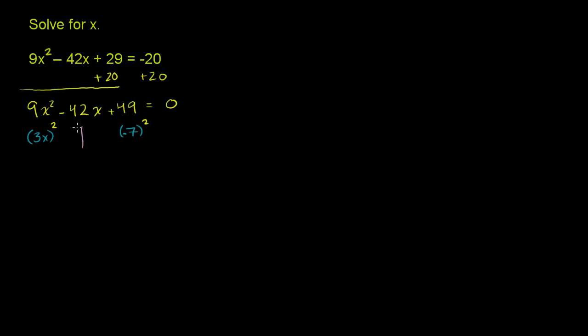So 42 = 2 × 3 × (-7). This fits the pattern of a perfect square.